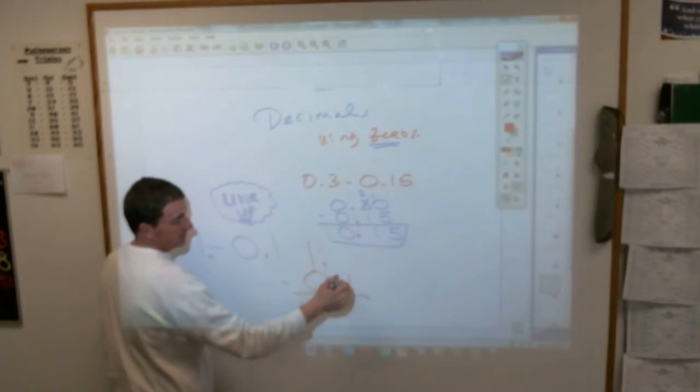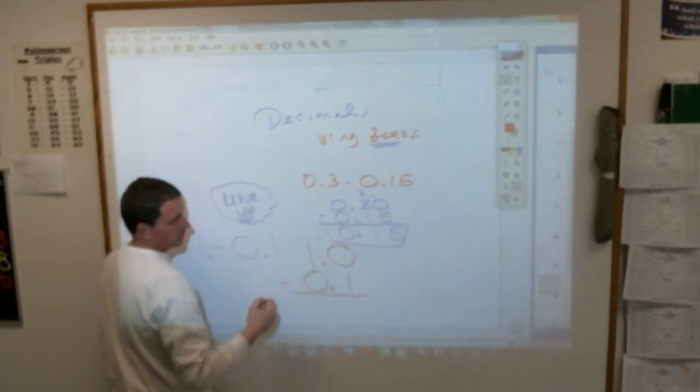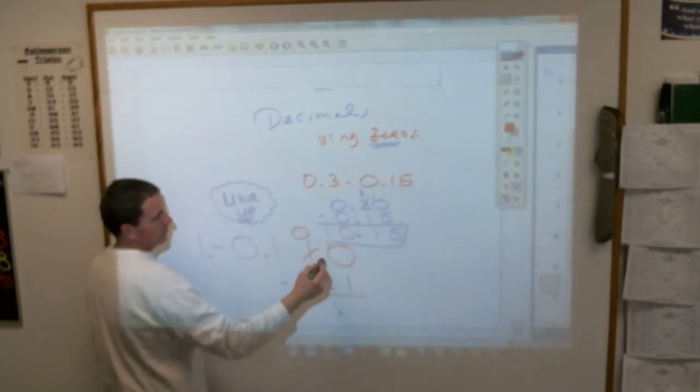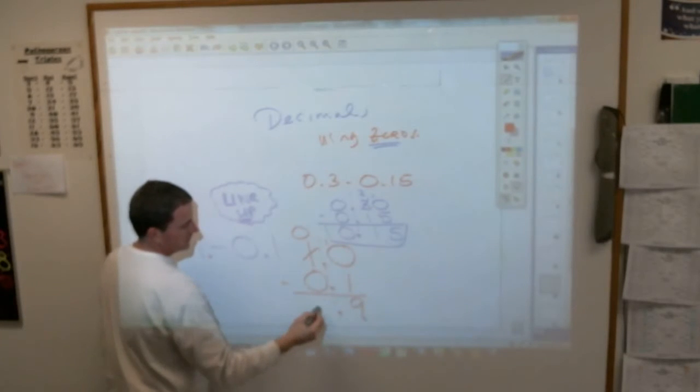The answer to this is not a 1 down here. You have to remember, you're going to put a 0 up there, and you're going to have to borrow. Take 1 away from 1, put a 10 up there, and your answer should be 0.9.